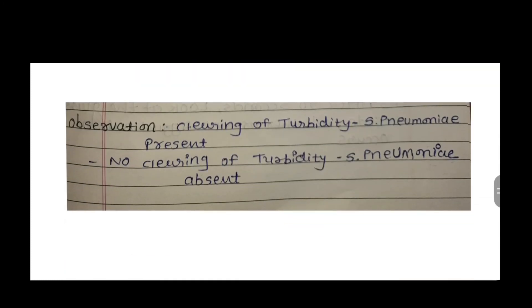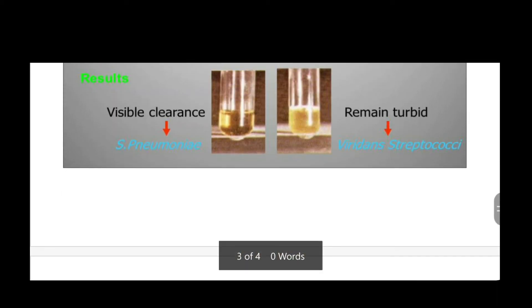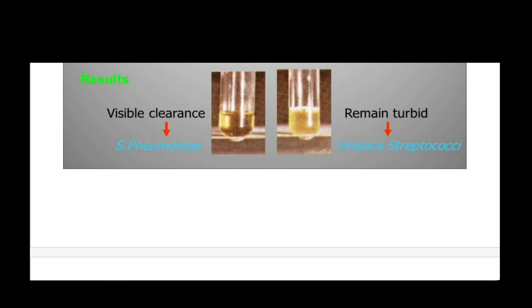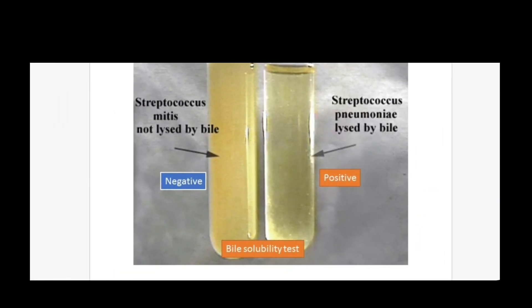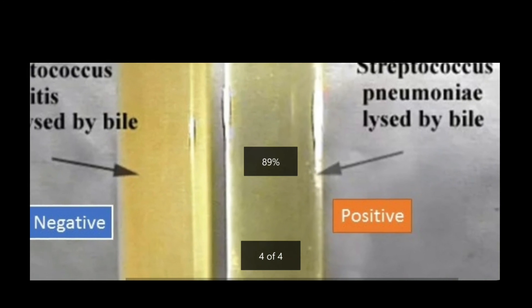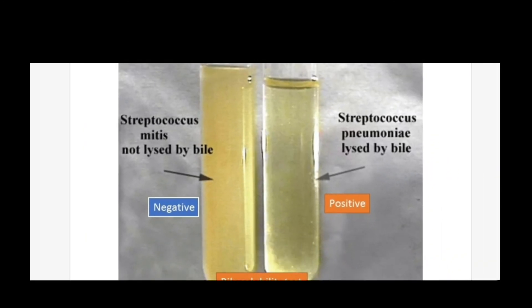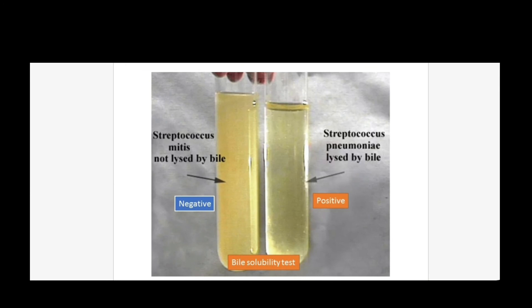Observation: Clearing of turbidity means Streptococcus pneumoniae is present. No clearing of turbidity means Streptococcus pneumoniae is absent. Visible clearance indicates Streptococcus pneumoniae; remaining turbidity — यह गंदा/dirty रहना — indicates viridans streptococcus। Negative result में clearing नहीं दिखती।